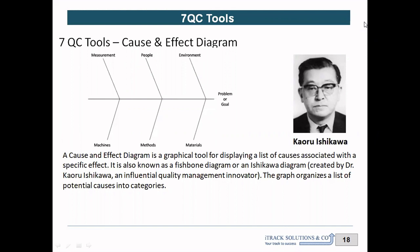This tool is called the cause and effect diagram. It is also called the fishbone diagram because the image looks like a skeleton of a fish. It is also called the Ishikawa diagram because this diagram was introduced by Kaoru Ishikawa, a very famous Japanese quality expert. The purpose of this diagram is to give you a graphical representation of your problem and what are the causes to that problem.